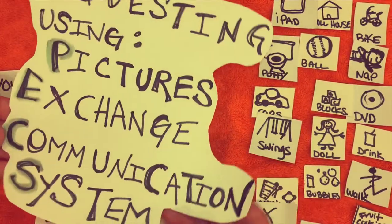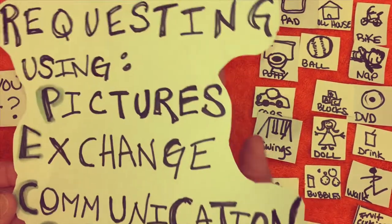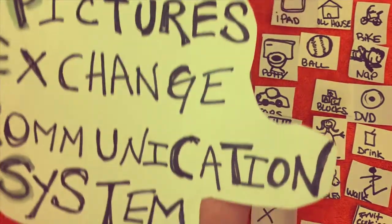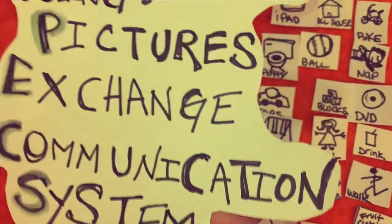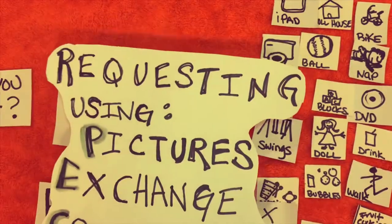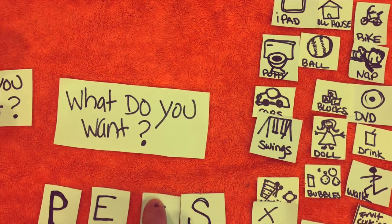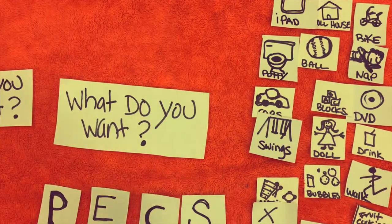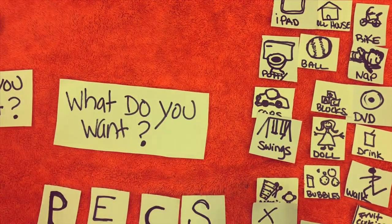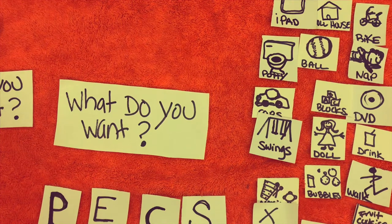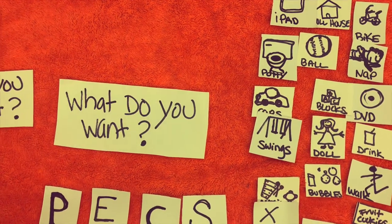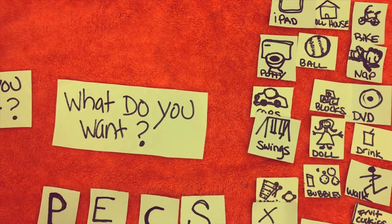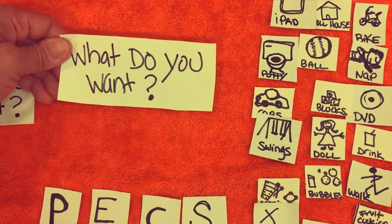Today we're talking about PECS — the Picture Exchange Communication System. You use this when somebody is requesting something but they can't say it verbally. What you do is ask, 'What do you want?'